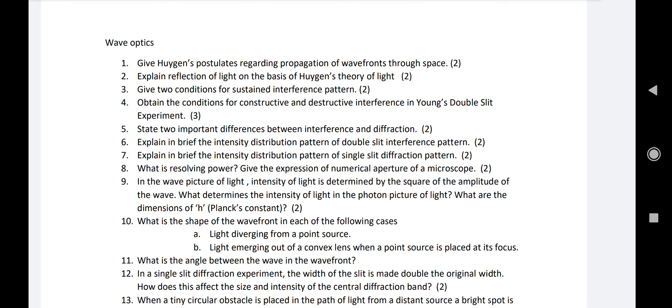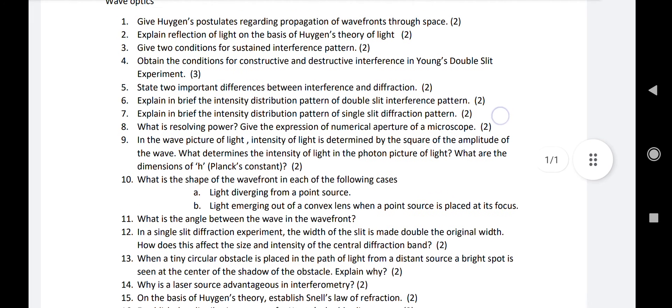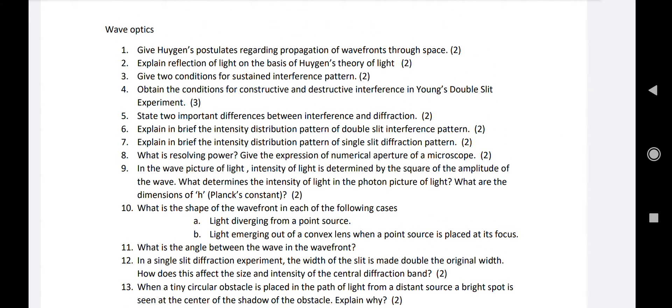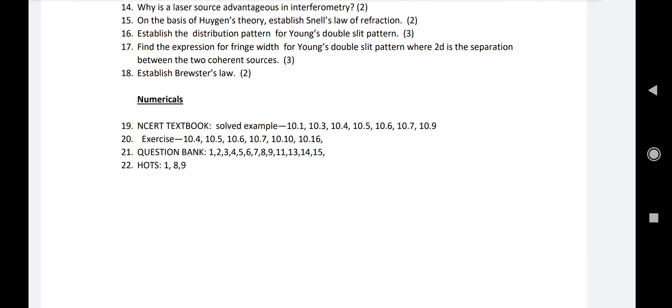Question number 11: What is the angle between the wave and the wavefront? Number 12: In a single slit diffraction experiment, the width of the slit is made double the original width. How does this affect the size and intensity of the central diffraction band? Question number 13: When a tiny circular obstacle is placed in the path of light from a distant source, a bright spot is seen at the center of the shadow of the obstacle. Explain why.